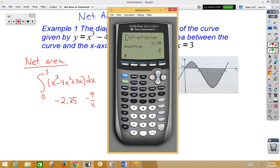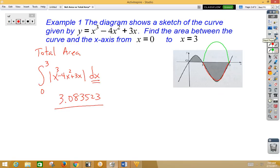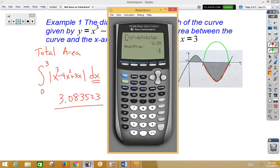If we want to do this for total area, then, again, same process. We would go math 9. And we're going to, this time, still go 0 to 3. But now we want to enter in our absolute value bars. So, math, right arrow over, option 1, we have x cubed minus 4x squared plus 3x dx.